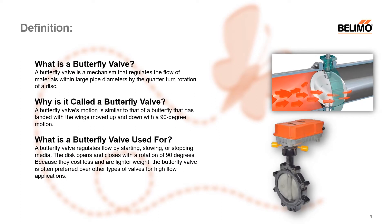By definition, a Butterfly Valve is a valve with a mechanism that regulates flow of materials within large pipe diameters by the quarter turn rotation of a disc. You can see in the picture on the far right, media coming along in a large pipe hits the disc and can go on either side and pass through. They call it a Butterfly Valve because its shape somewhat mimics the motion of a butterfly, where the wings move up and down in a 90-degree rotation. Traditionally they're used to regulate, stop, or slow the media on large-scale pipes — large flow, large pipes, large valves. They're usually a little bit smaller and less expensive compared to other high-flow valves in the marketplace.